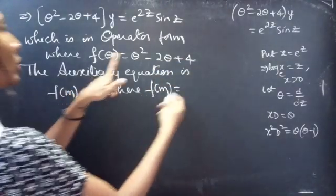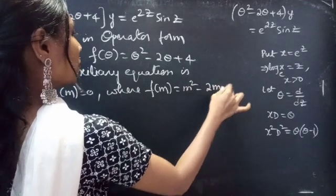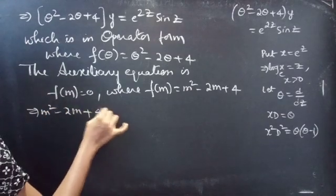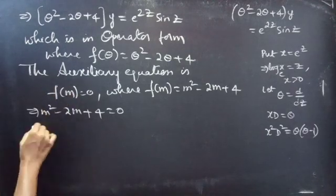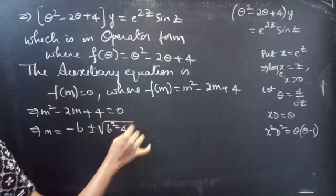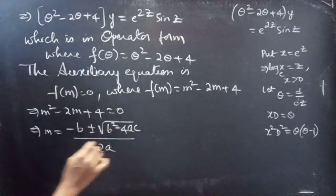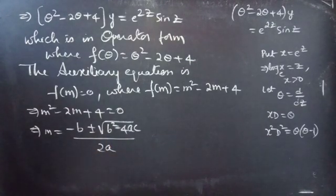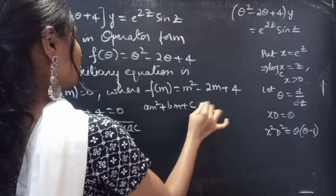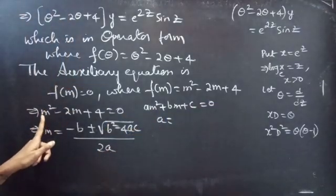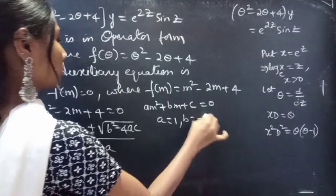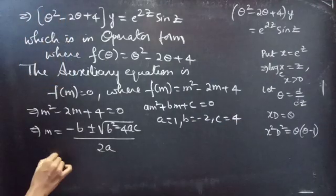The auxiliary equation is m squared minus 2m plus 4 equals 0. We find the roots using the quadratic formula: m equals negative b plus or minus square root of b squared minus 4ac, all over 2a. Comparing with our equation, a equals 1, b equals negative 2, and c equals 4.